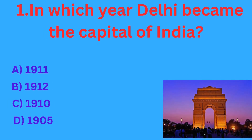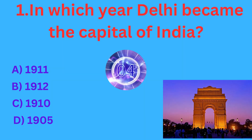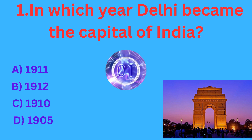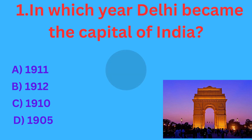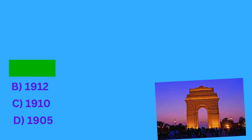In which year did Delhi become the capital of India? The correct answer is option A, 1911.